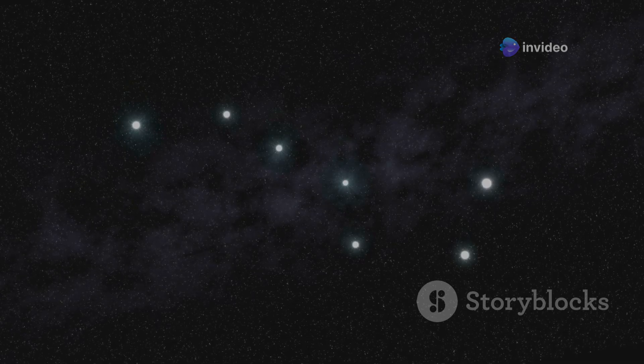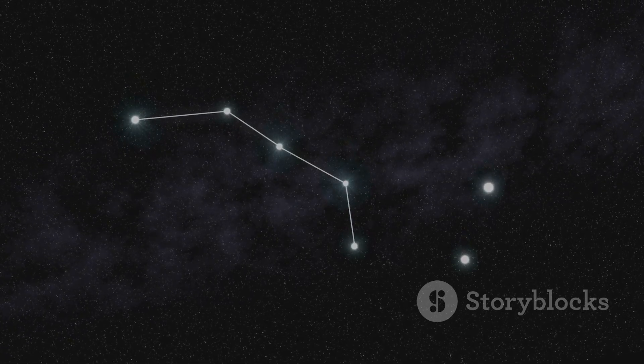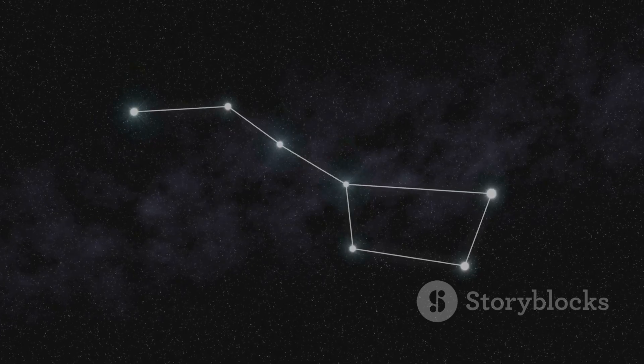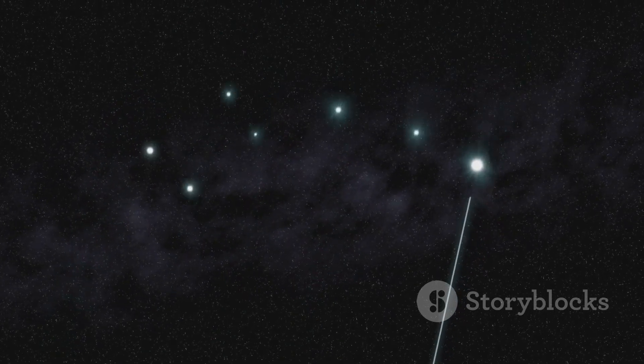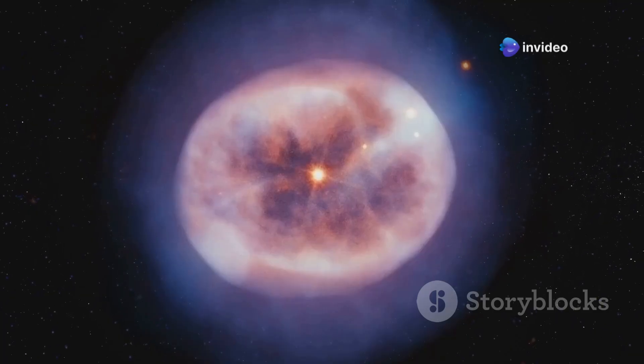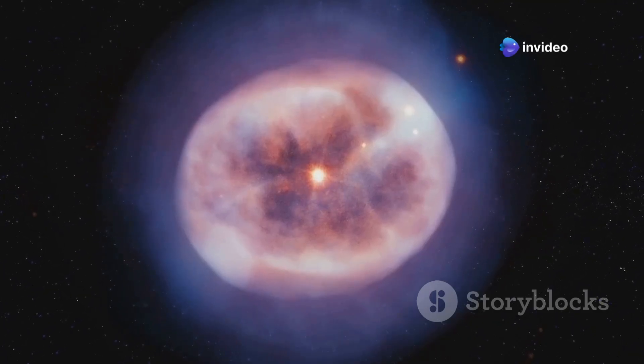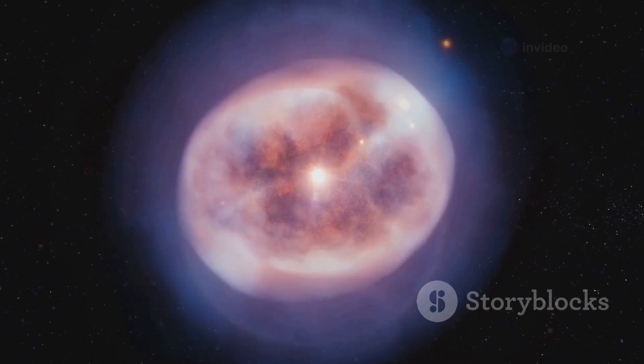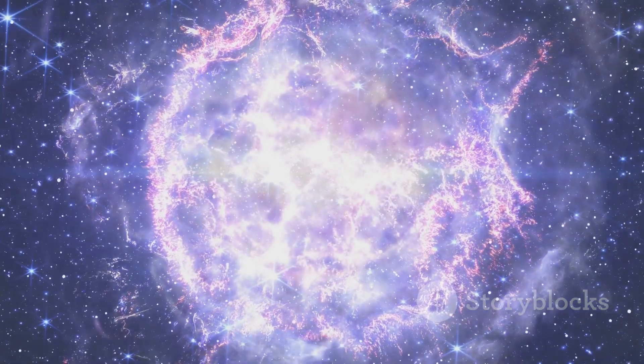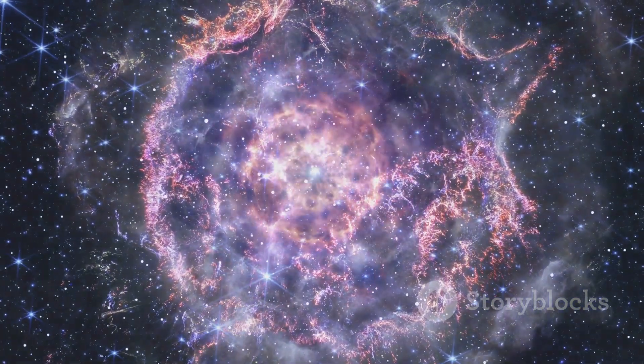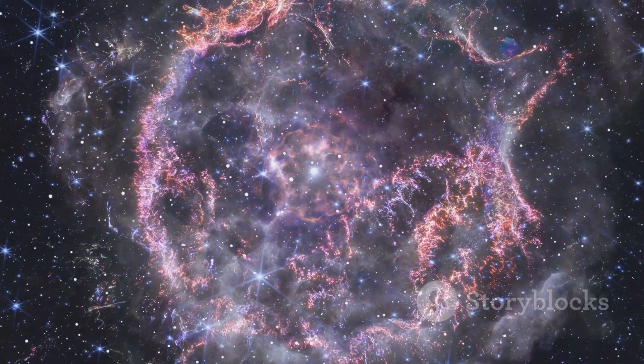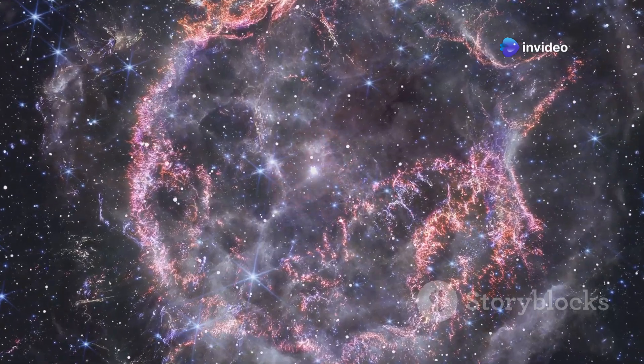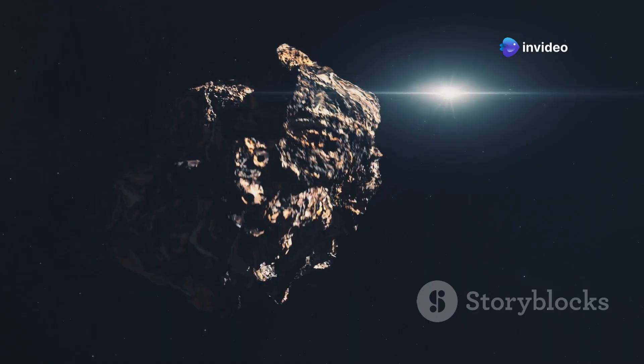But VY Canis Majoris is just one example of a hypergiant. There are other stars out there that are equally impressive, each with their own unique characteristics. This star is nearing the end of its life. As it ages, it sheds its outer layers, creating a beautiful but chaotic nebula around it. It's expected to explode as a supernova in the next 100,000 years. This explosion will be one of the most spectacular events in the galaxy.